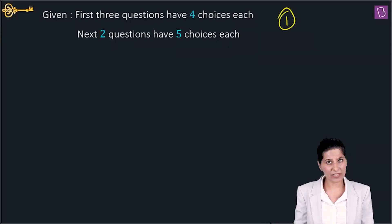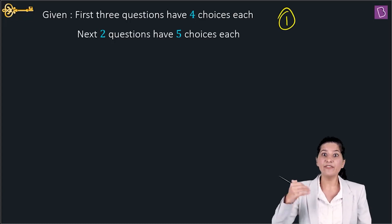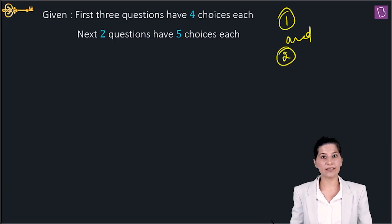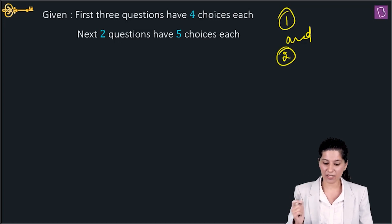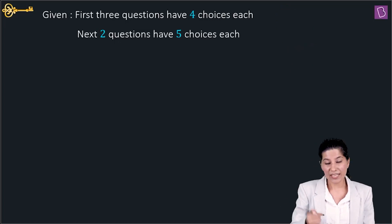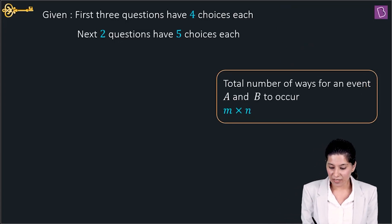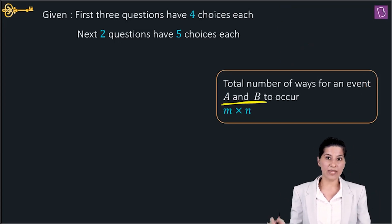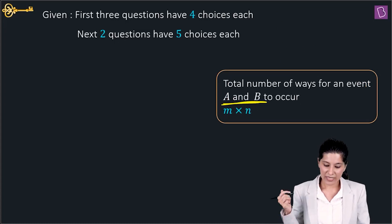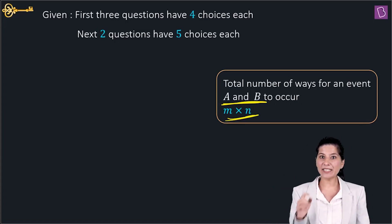You need to answer the first question, then the second, then the third — 'and' means multiplication. The total number of ways for events A and B to both occur is M multiplied by N. This is the fundamental principle of counting — the principle of multiplication.